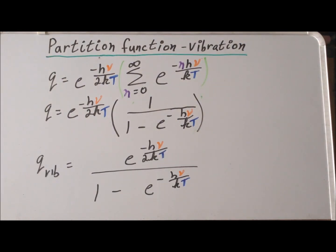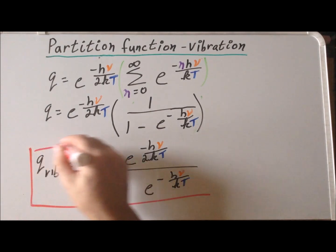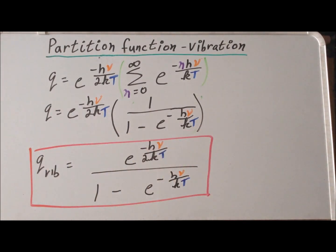So we have as a result that the partition function for vibration, the harmonic oscillator, which we'll call q sub v here, is equal to e to the minus h nu over 2kT divided by 1 minus e to the minus h nu over kT. Which is the result that we were looking for.